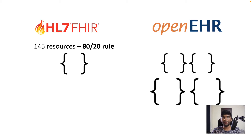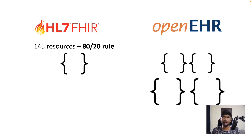FHIR has 145 resources which follow this 80/20 rule, meaning if you alone are capturing a certain data point in your hospital and you want to publish that to a FHIR resource, you can't do it unless 80% of other people also capture that data point. This becomes a problem quickly, because most people want to capture these data points anyway, and they end up using extensions to capture them.